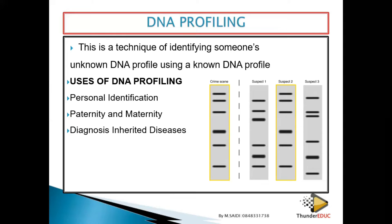Another use is diagnosis of inherited diseases. Some diseases can be diagnosed using DNA profiling to determine exactly which disease a person has, and sometimes you can even find a cure. Another use is criminal identification — collecting samples from a crime scene, comparing to a suspect, and finding who committed the crime. Then there is forensics — even if someone has been burned or died in an accident 20 years ago, as long as some remains exist, we can still extract DNA.